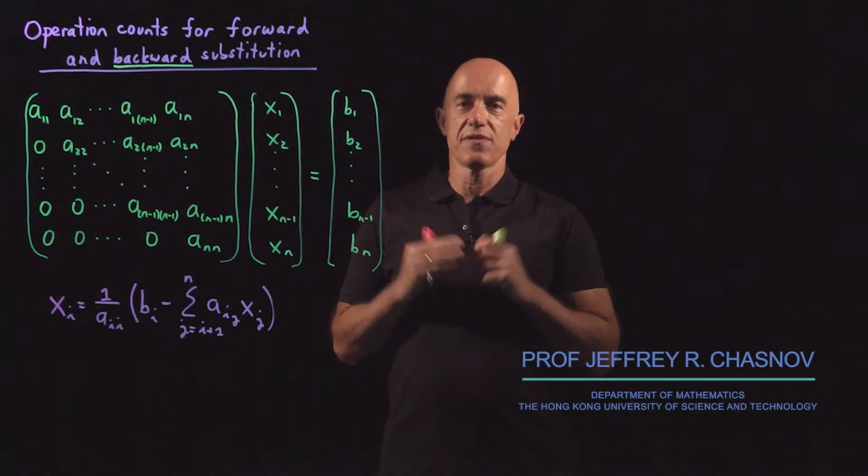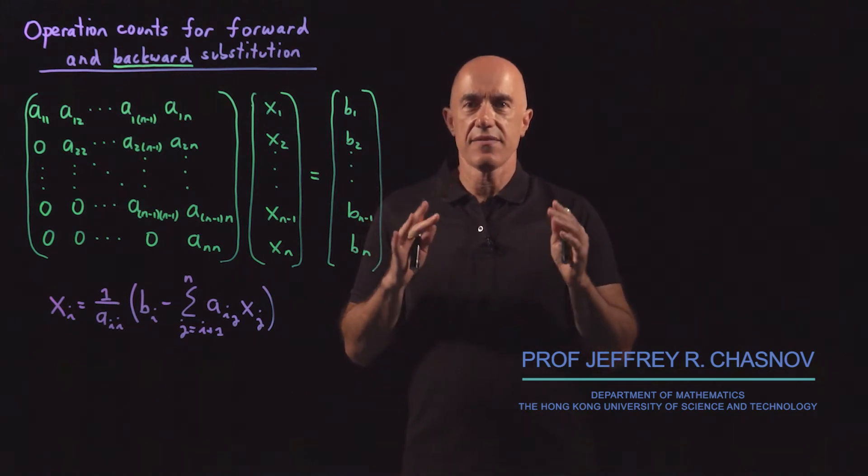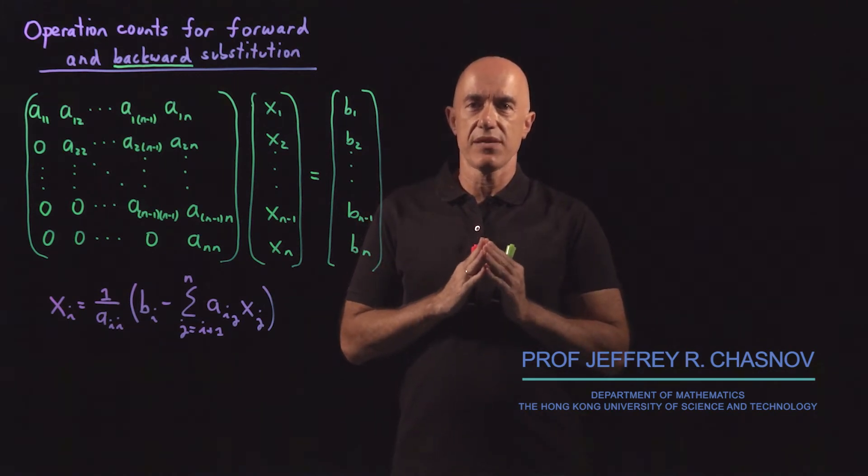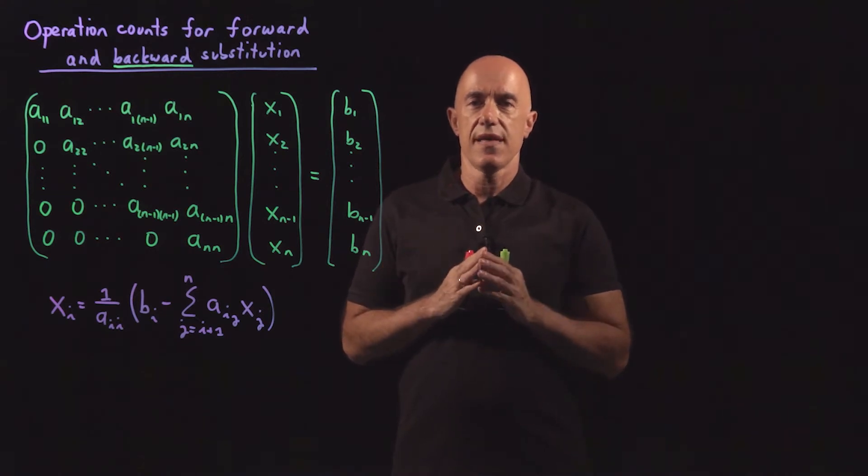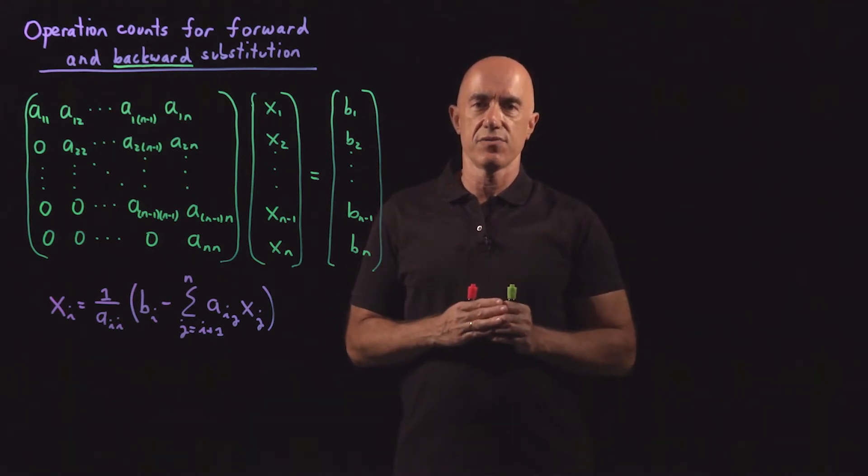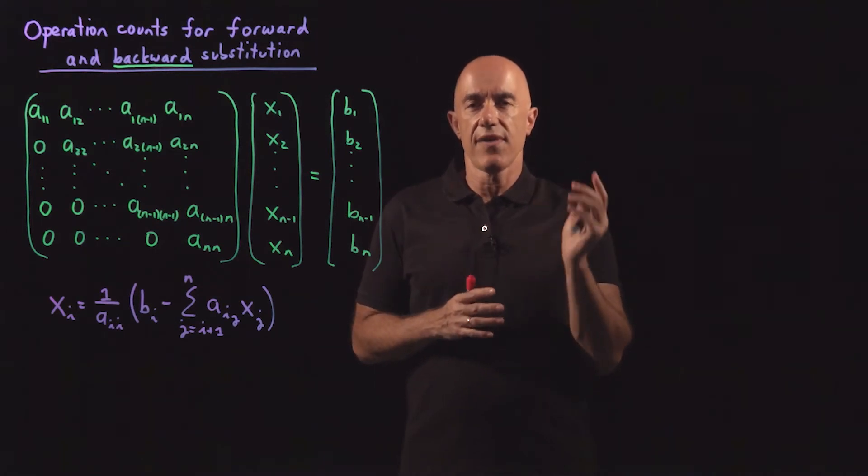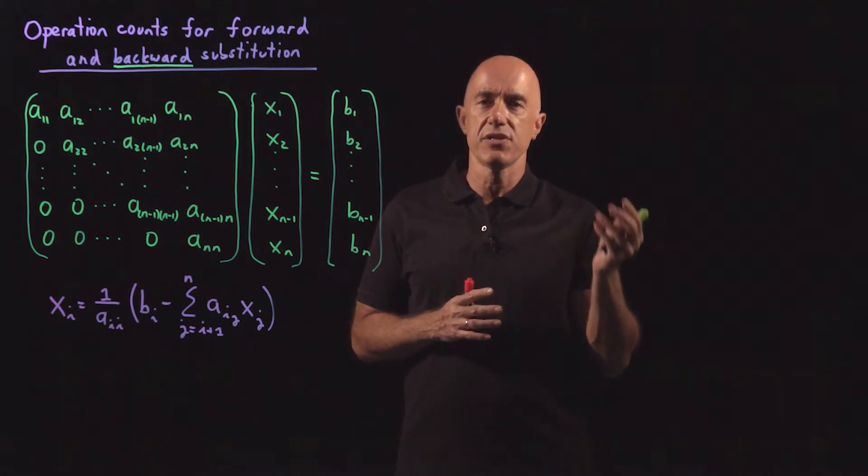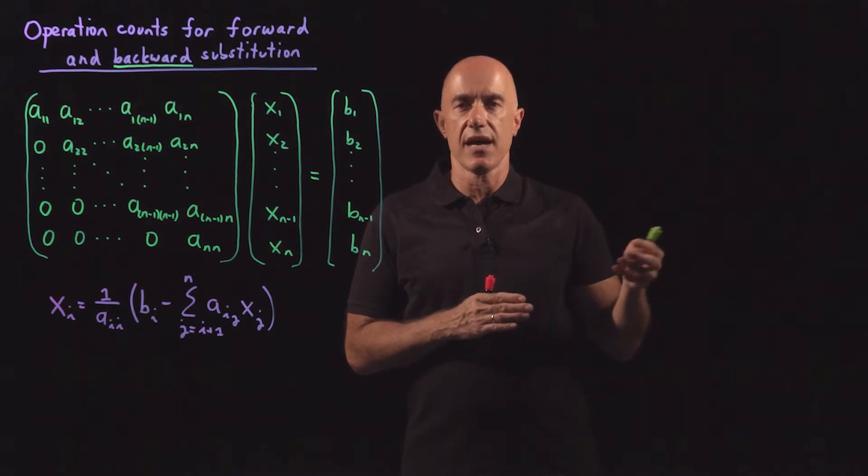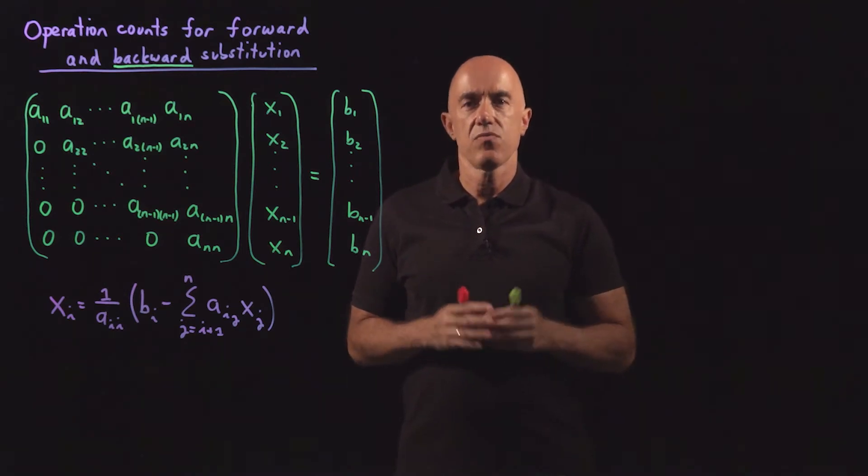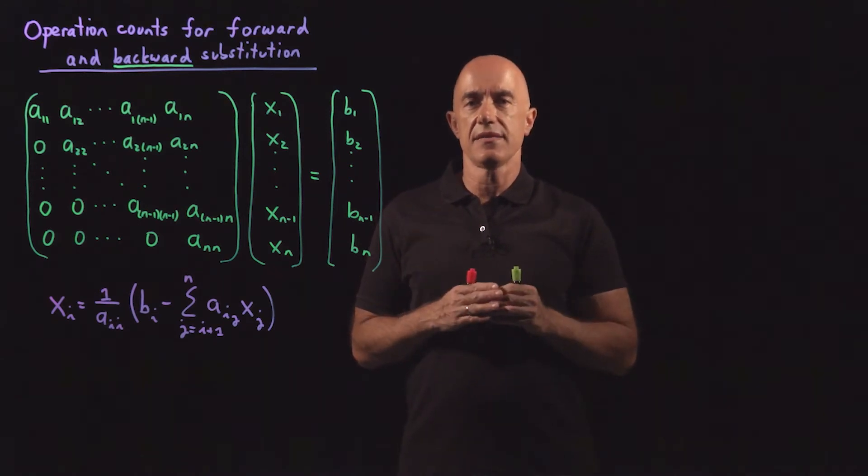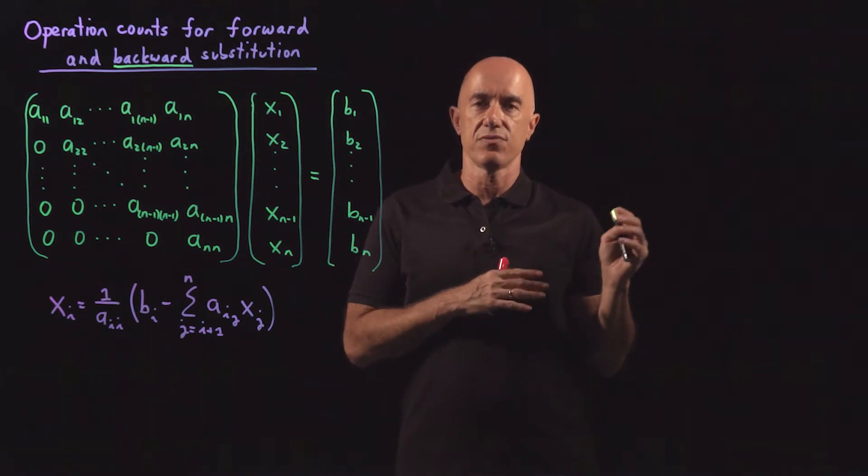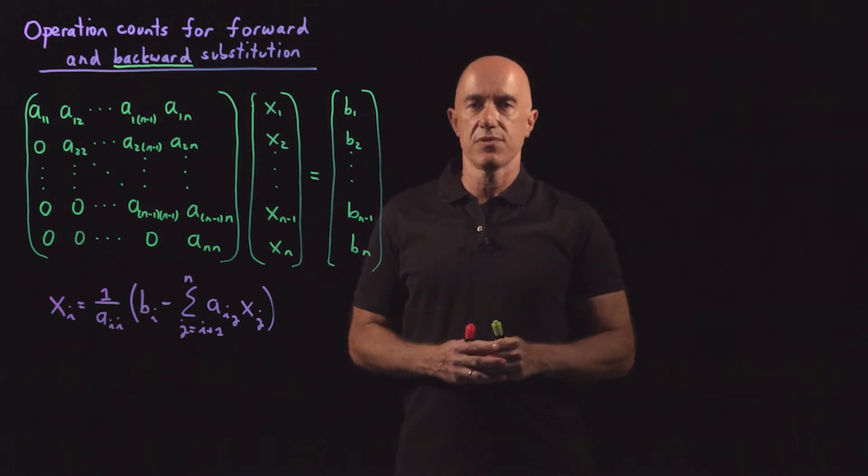I've been trying to convince you that finding the LU decomposition of a matrix, which is essentially Gaussian elimination, is going to take a lot longer than the solution of LUx equals b. So to solve Ax equals b using Gaussian elimination for many right-hand sides b is very inefficient. What you should do is first find the LU decomposition of A and then solve LUx equals b by forward and backward substitution.